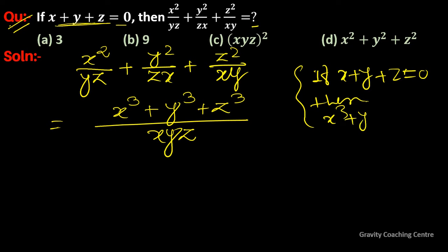x cube plus y cube plus z cube equals 3xyz. So our expression equals 3xyz upon xyz, which simplifies to 3.